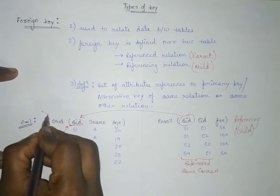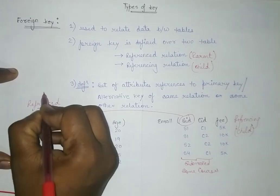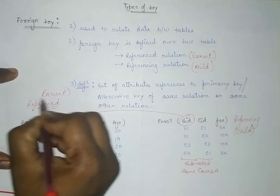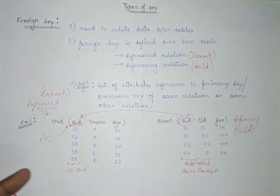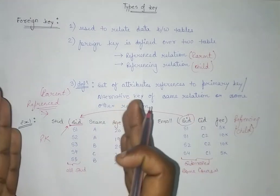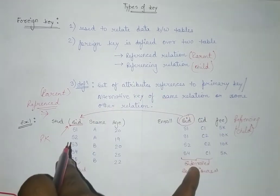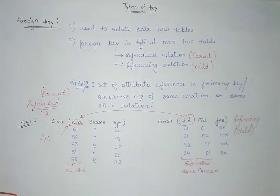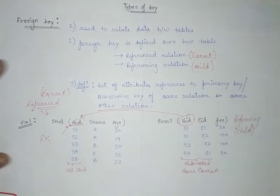So the Enrolled table is the referencing or child table, and the Student table is the referenced or parent table. The student ID list in Enrolled has been referenced from the Student table, so Student is the referenced table and Enrolled is the referencing table. This is the case for two different relations.